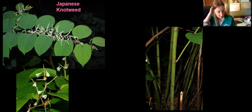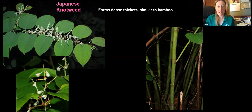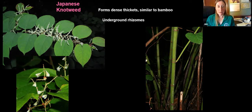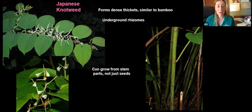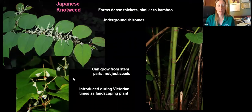Next we have Japanese knotweed. This is a perennial that can grow up to 10 feet tall, usually near waterways. It looks a lot like bamboo, especially the stems, and it forms very, very dense thickets. It has large heart-shaped leaves with white fringed flowers late in summer, followed by little white-winged seeds. It can spread very quickly using underground rhizomes — horizontal underground stems — that can grow through even pavement and cement, and it can grow from stem parts, not just seeds. It was introduced purposefully during Victorian times as a landscaping plant and is one of the hardest ones to battle in Burlington County parks.